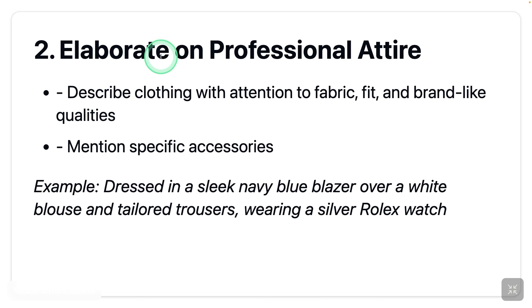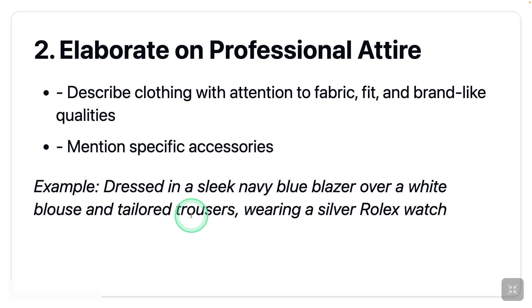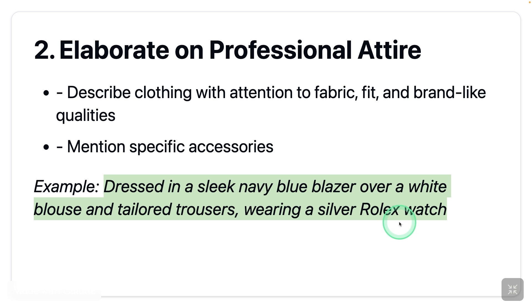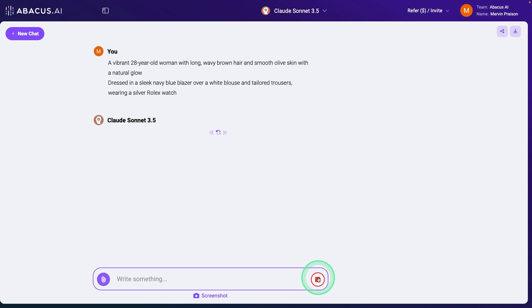Number two: elaborate on professional attire. Describe clothing with attention to fabric, fit, and brand-like qualities, and mention specific accessories. Here is an example: 'Dressed in a sleek navy blue blazer over a white blouse and tailored trousers, wearing a silver Rolex watch.' Adding this to the previous prompt and trying it again — here is the picture. Exactly what we expected: a blazer with a Rolex watch.